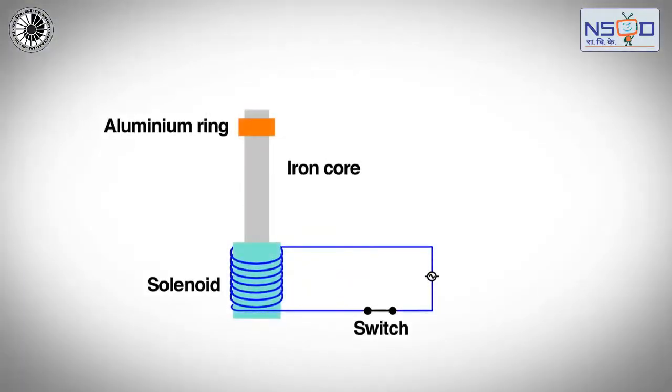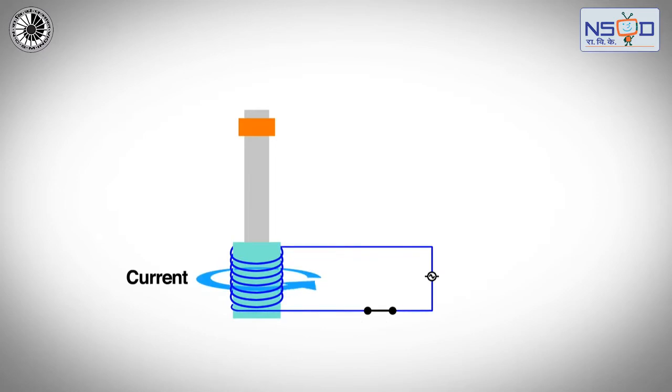When alternating current flows through the coil wrapped around a base made of iron, the coil sets up a varying magnetic field. The circulating current sets up another magnetic field around the aluminium disc.